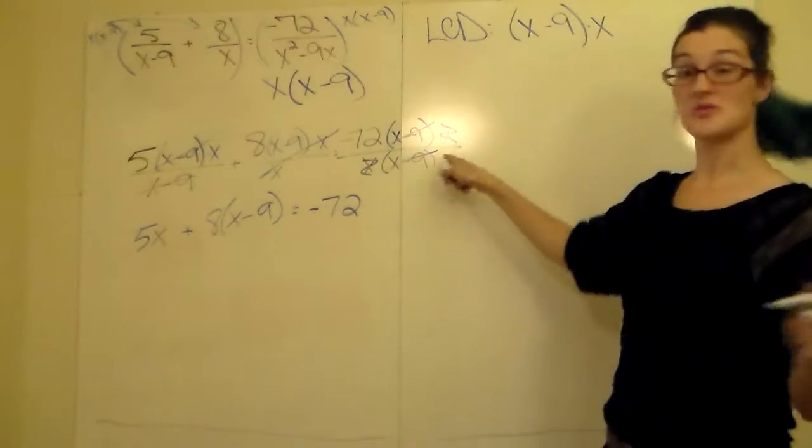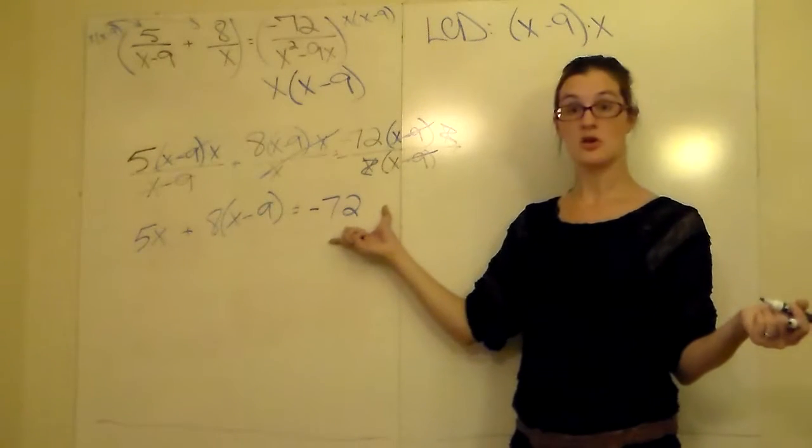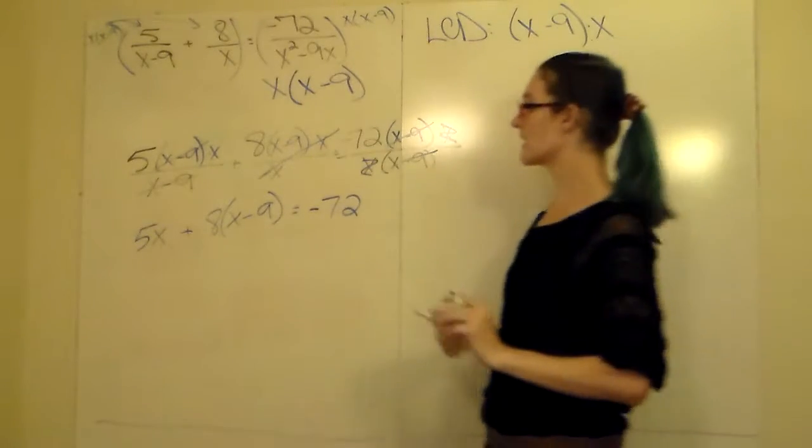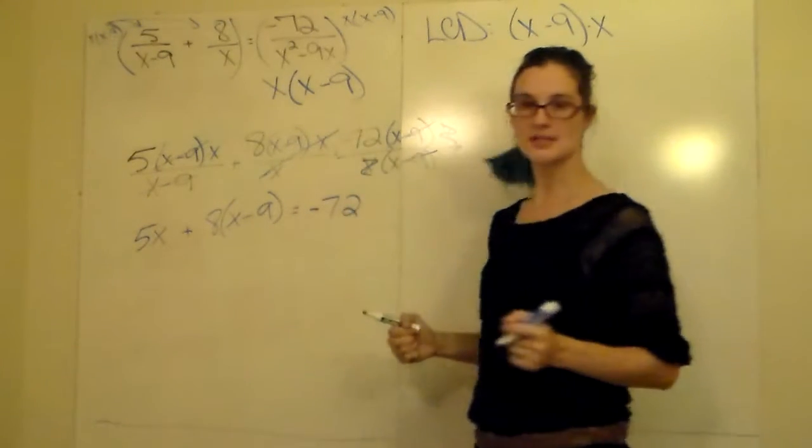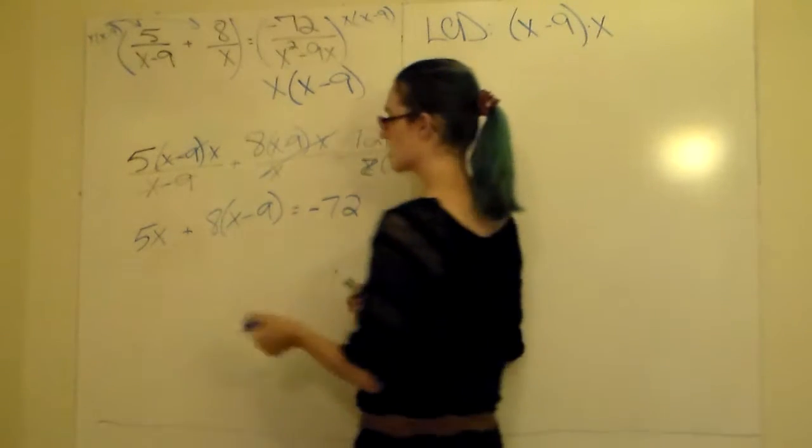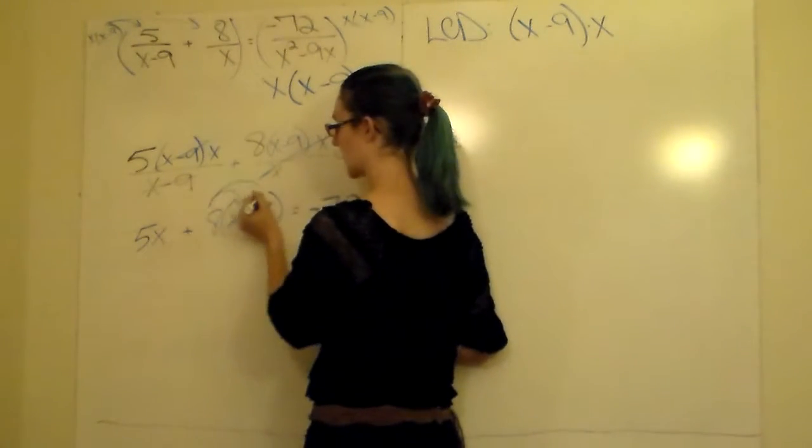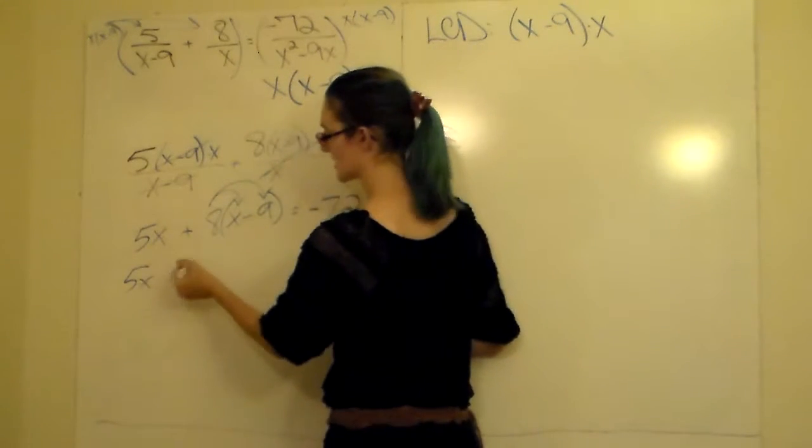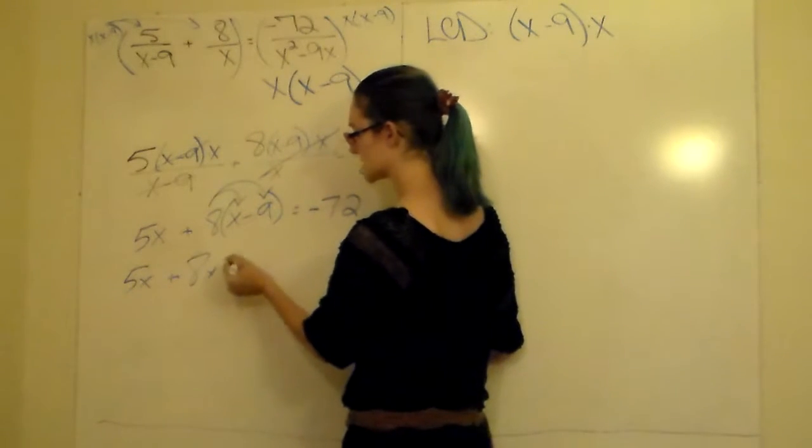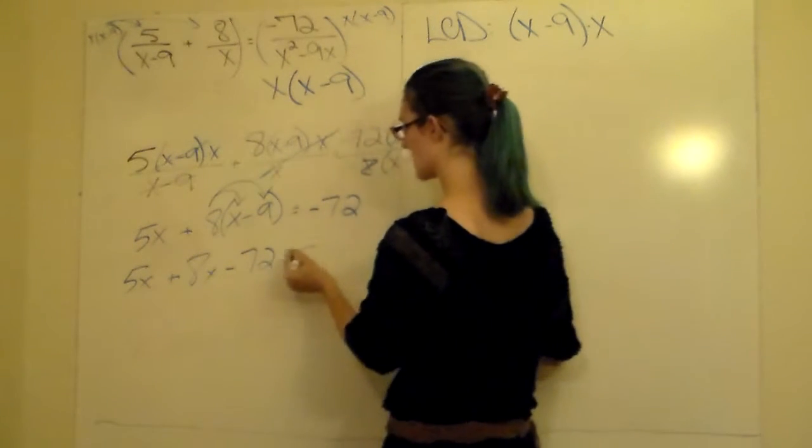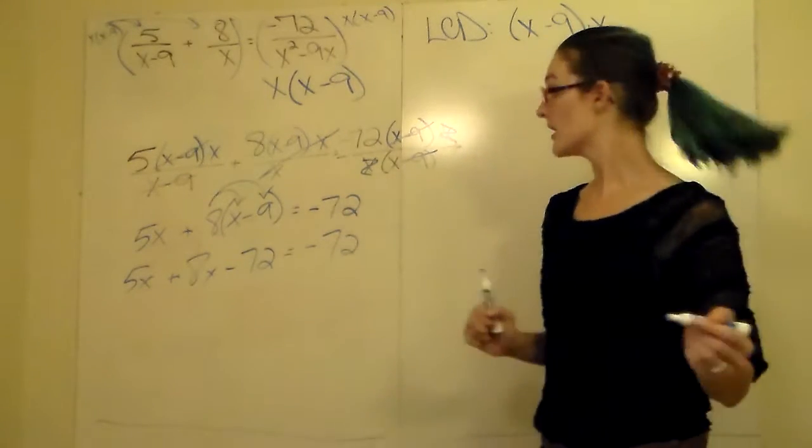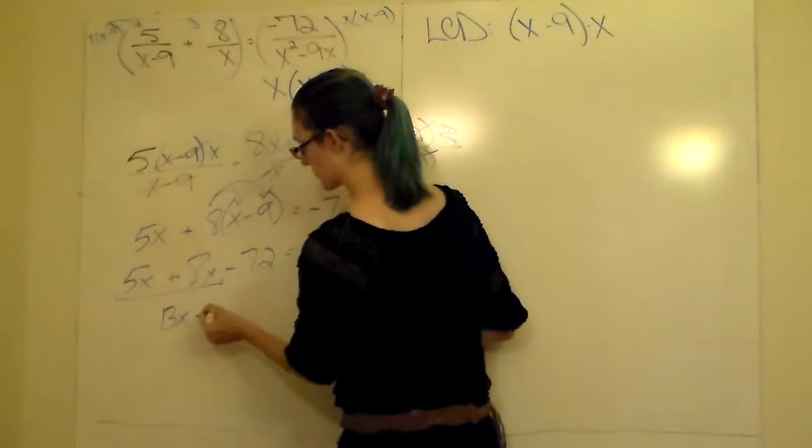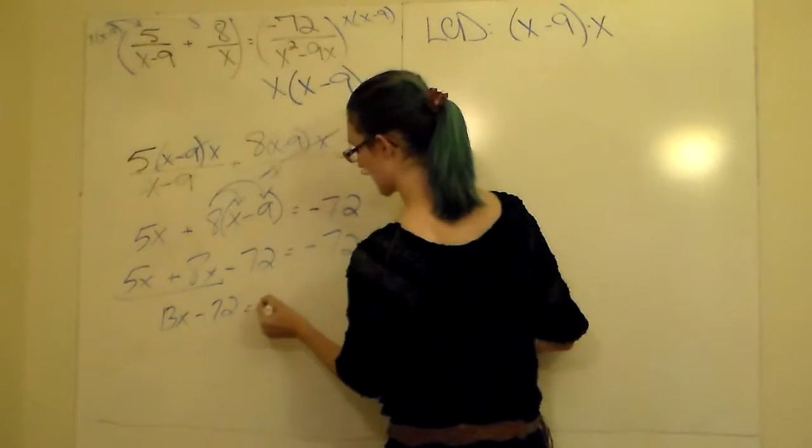So one, two steps, fractions are all gone. It's a whole lot simpler looking than that was. So now all we're going to do is distribute to remove the parentheses, combine like terms, solve for x. So we have 8 times x and 8 times negative 9. 5x falls. 8 times x is 8x. 8 times negative 9 is negative 72. Equals negative 72. Combine like terms. 5x plus 8x, that would be 13x minus 72 equals negative 72.